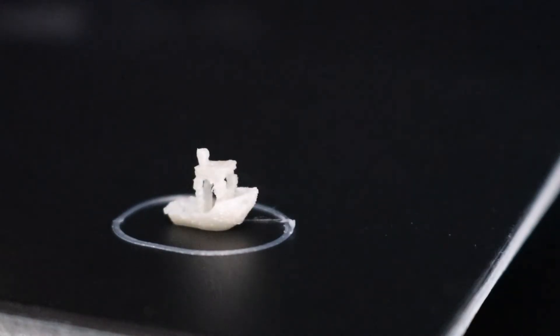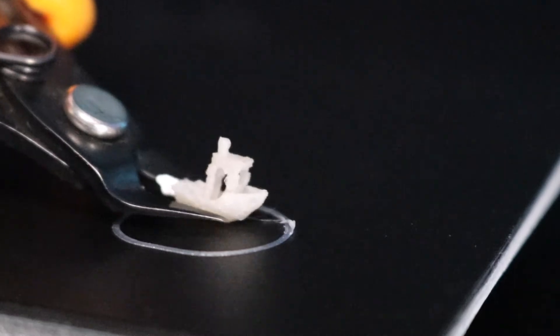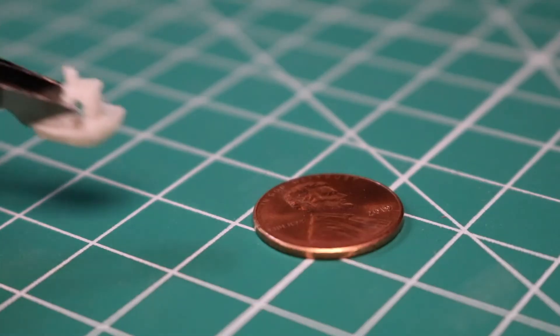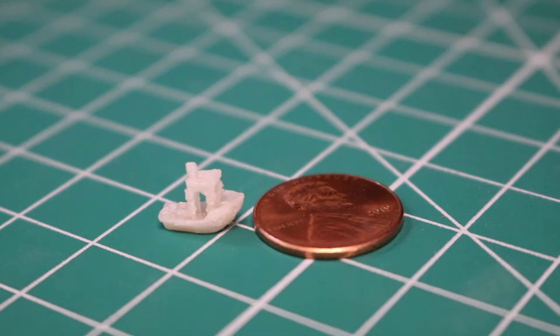Removing a part of this size from the build plate is pretty tricky. It comes right off, but you don't want to lose it. One of the biggest challenges I had when I was photographing the Benchy was trying not to blow it away, just by breathing near it.